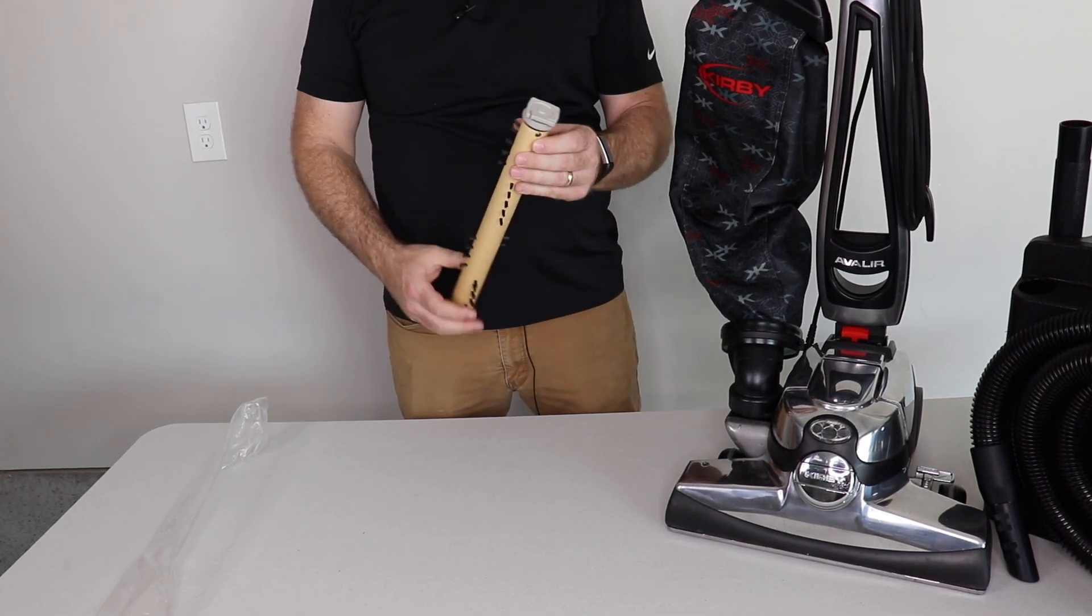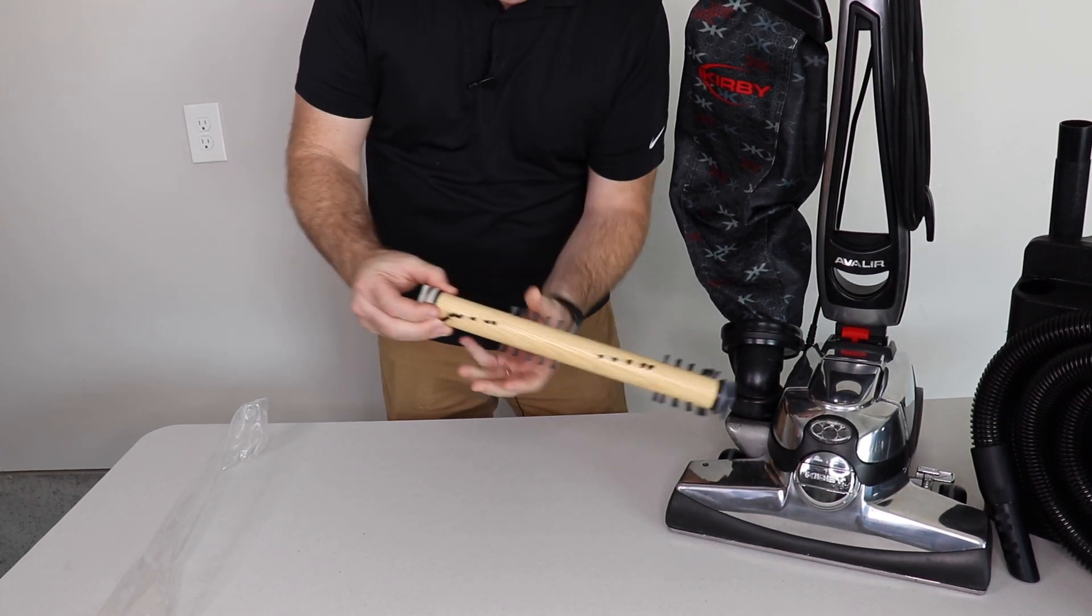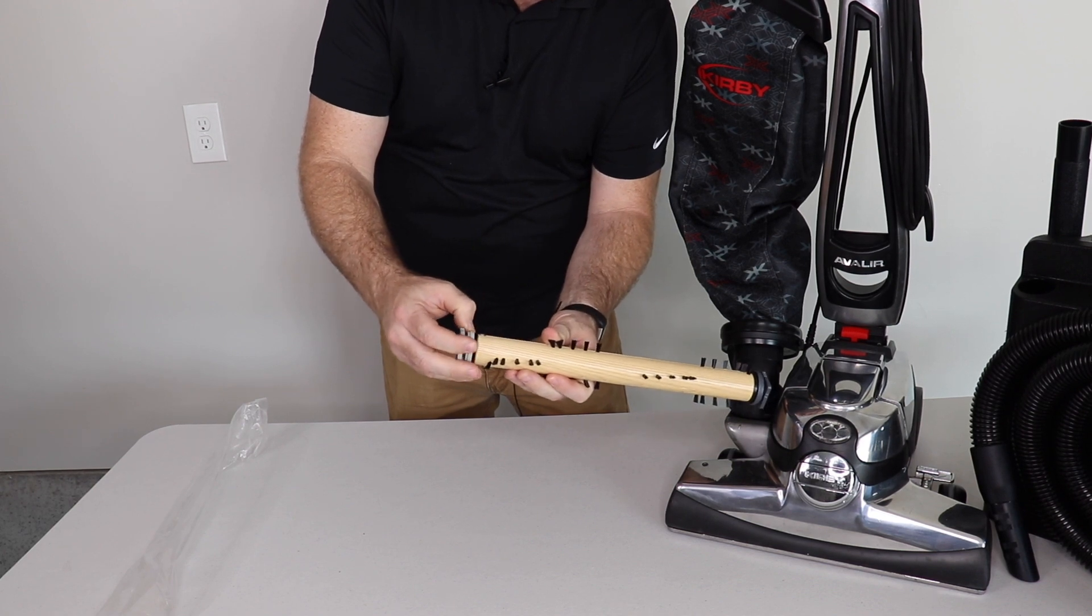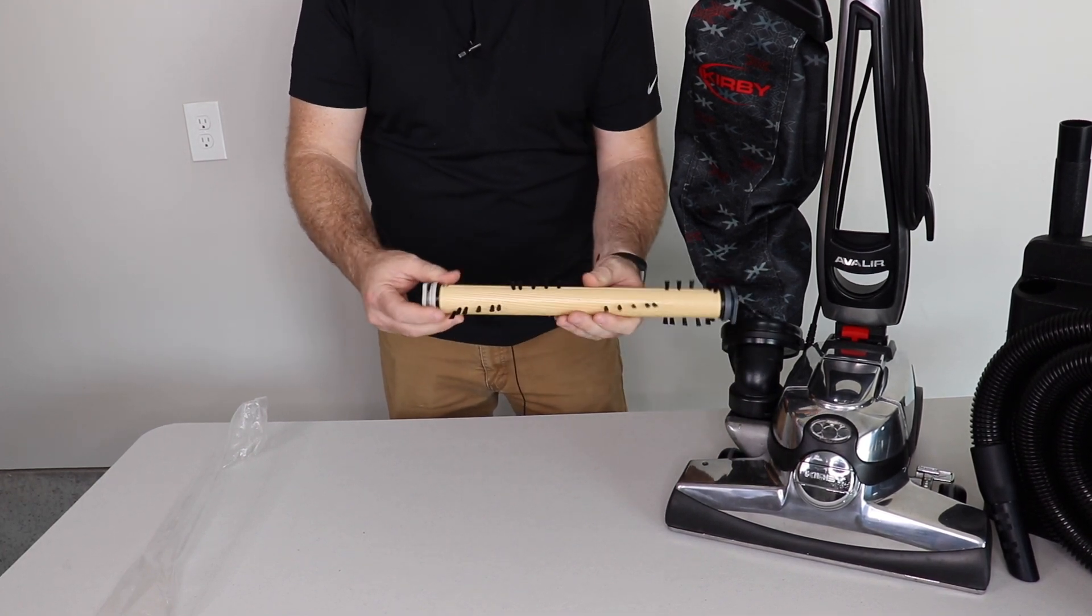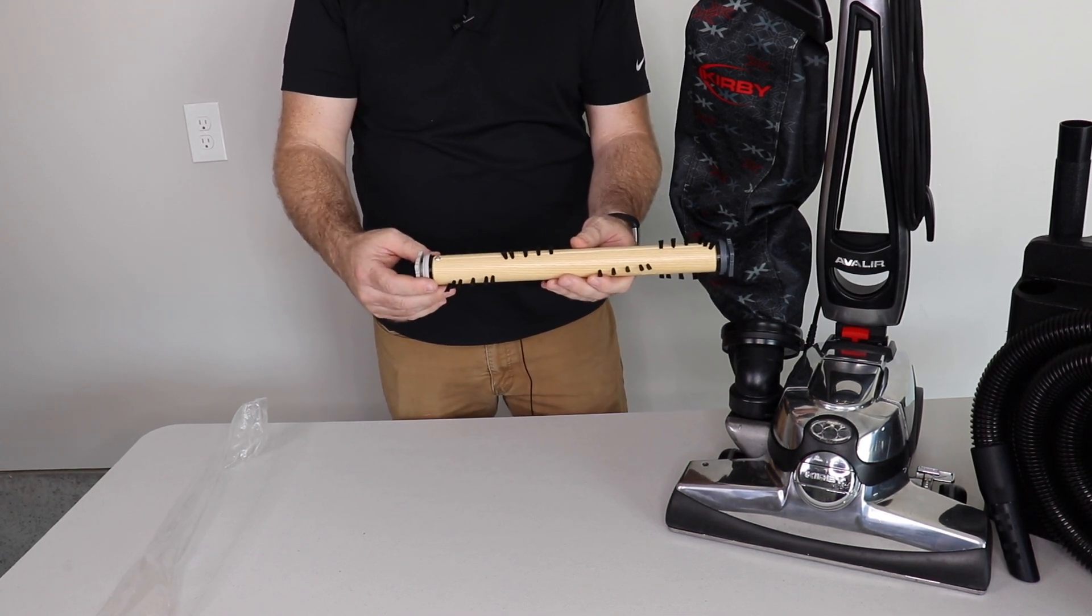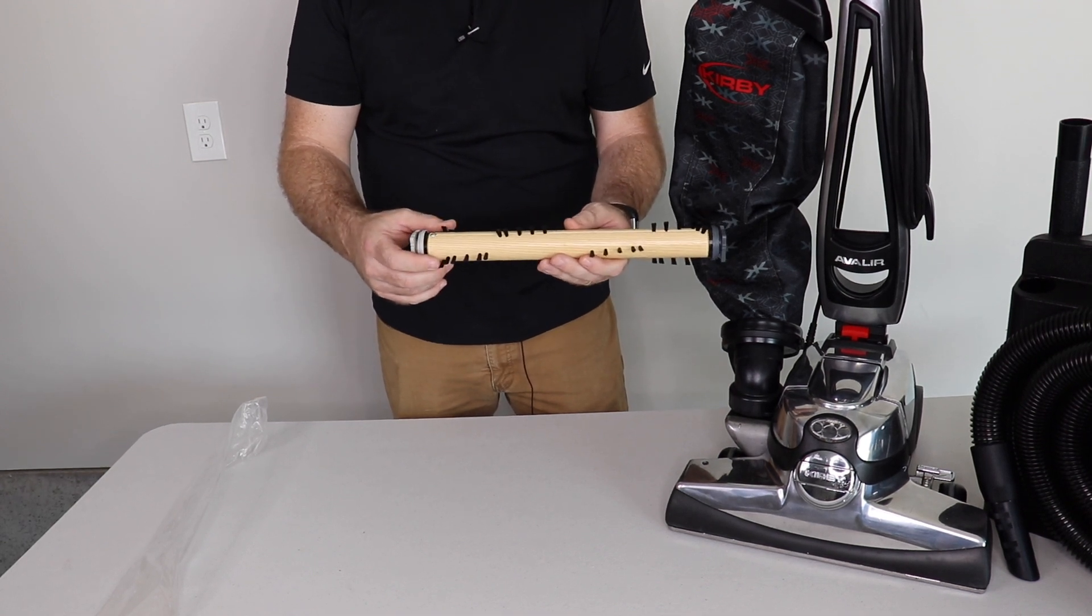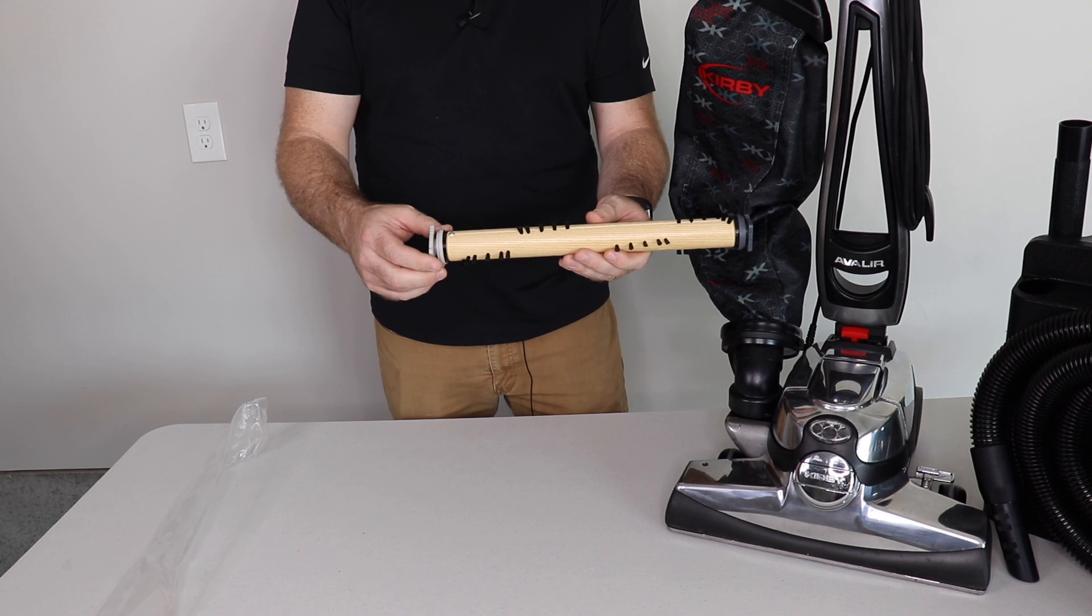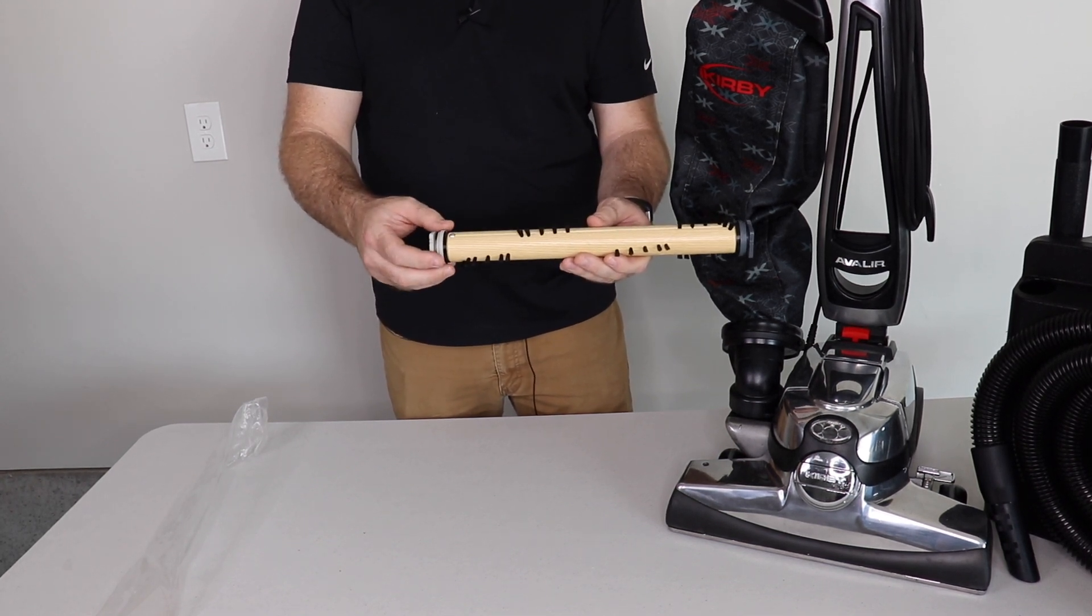So if you look, and I'll actually show you how to do this in a second, but if you look at the brush roll you'll see that there's actual settings. There's a three, a two, and a one. And here at GreatVacs we set ours all at a two, that's in the middle. But if you want to get closer to your floor you're going to mark it at a two or a three. If you want it farther away from your floor you might mark it at a one.